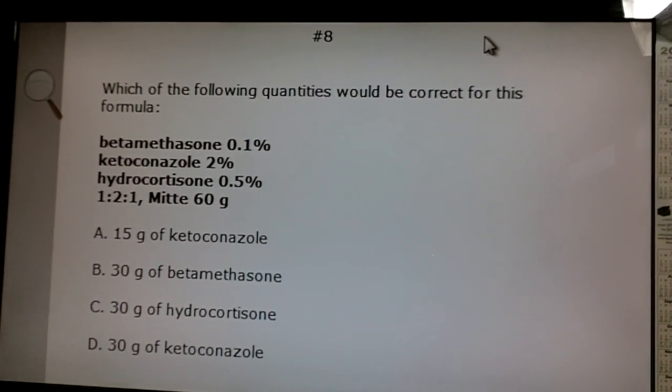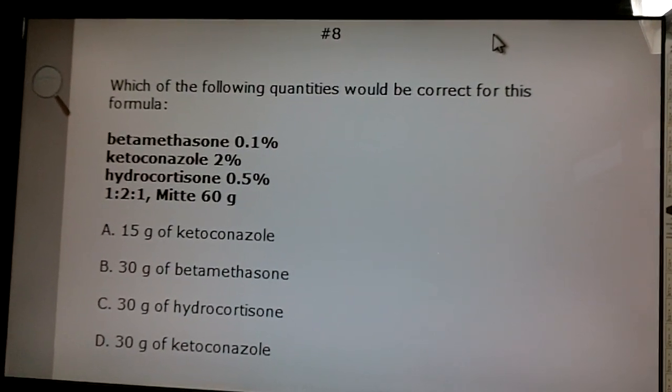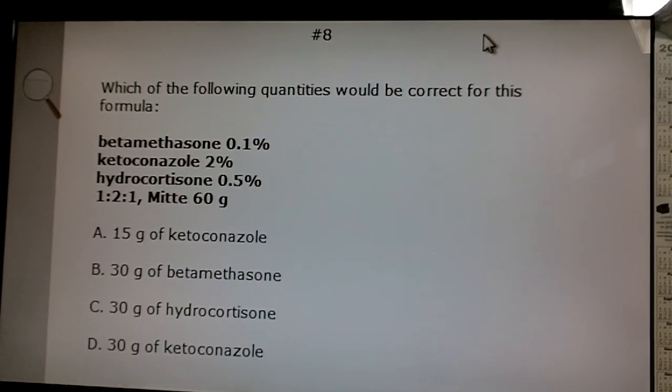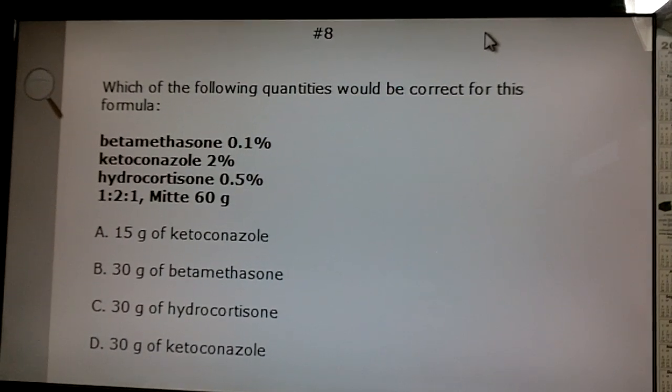It gives you three different chemicals and then it says it's a 1 to 2 to 1 ratio, mid 60 grams. Mid 60 grams just means 60 grams is the quantity that we are looking for.